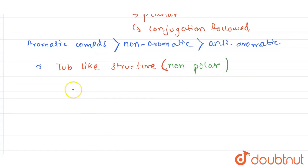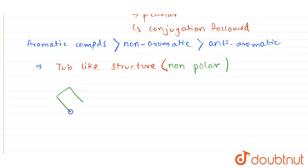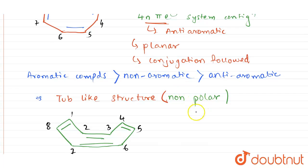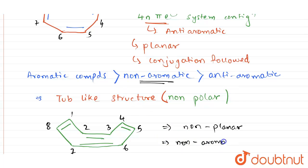If you see the tub-like structure of cyclooctatetraene, it looks somewhat like this. Counting the carbon atoms: one, two, three, four, five, six, seven, eight — total eight carbon atoms, so the structure is valid. This changes the structure from planar to non-planar. For stability reasons, the non-aromatic compounds are more stable than anti-aromatic ones. Since the structure is now non-planar, the compound is non-aromatic, and therefore the cyclooctatetraene molecule is a non-polar compound.